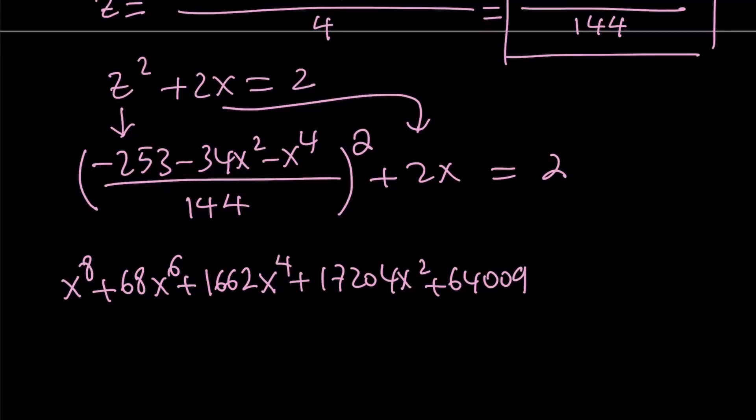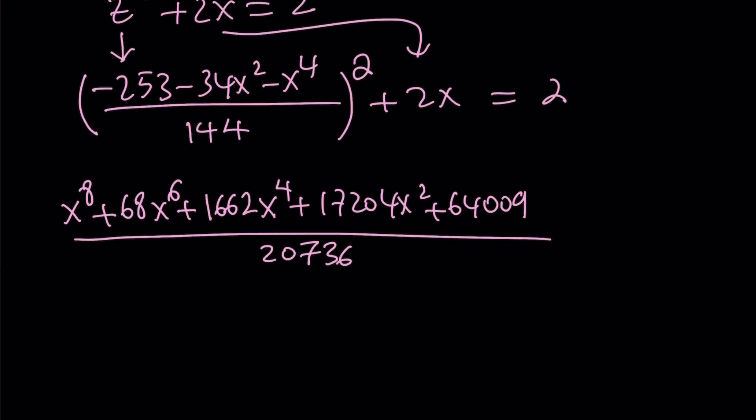So it's going to become x to the 8th power. So basically I'm negating everything in the numerator because I'm squaring it, so it doesn't matter. And the whole thing is going to be divided by 144 squared, which is 20,736.